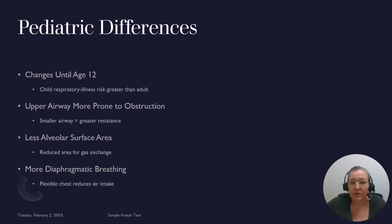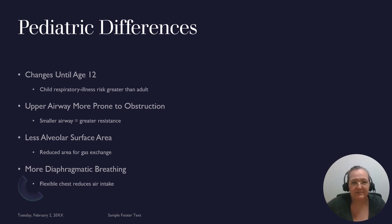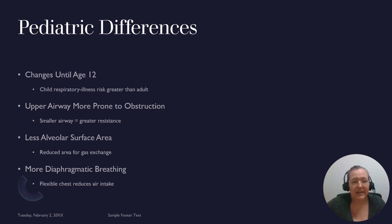Children have smaller airways — the smaller the child, the more narrow their airways — which means they're more prone to respiratory difficulties if they have mucus or any inflammation. There's more likelihood of obstruction, and they have less alveolar surface area. When oxygen exchange happens it's generally enough, but if they're sick it's not, so they can rapidly decline.